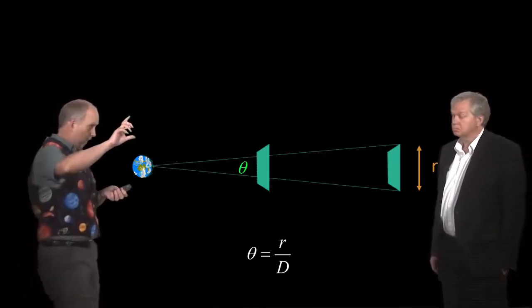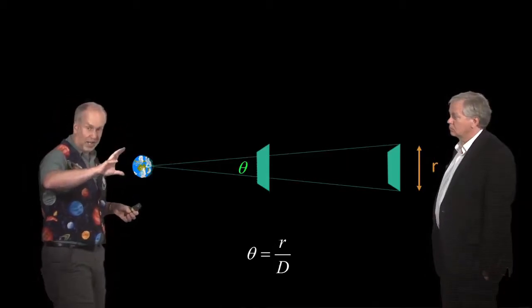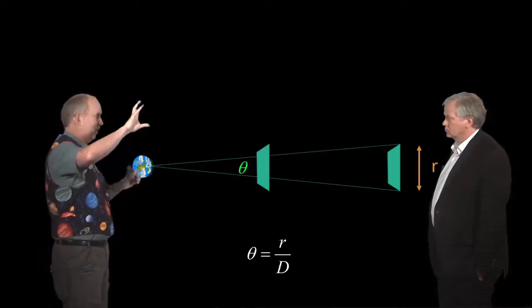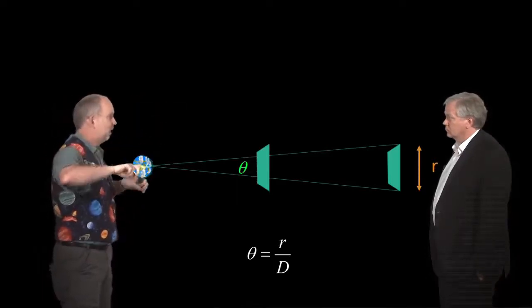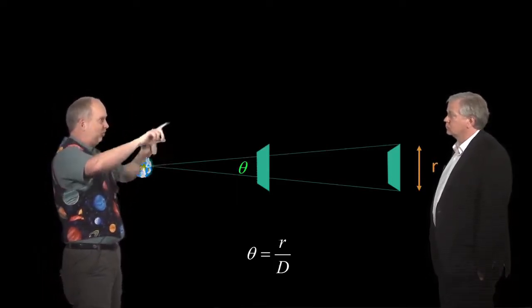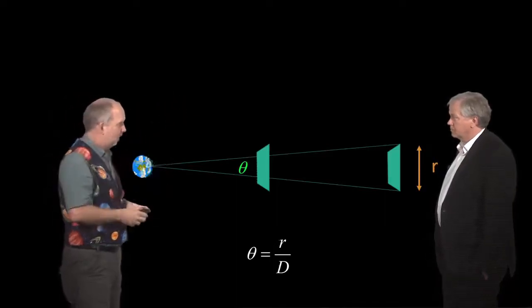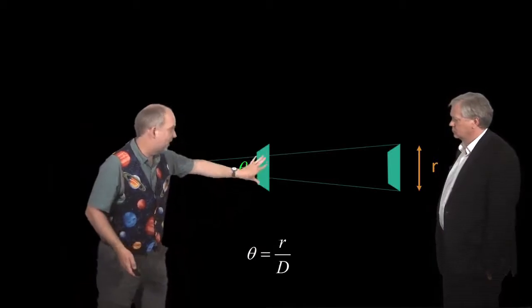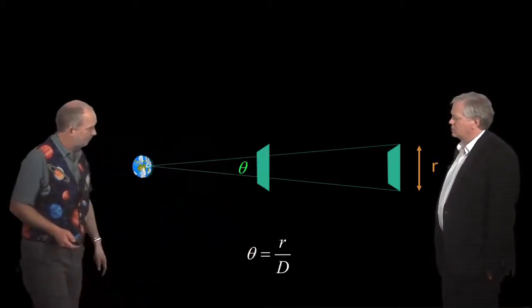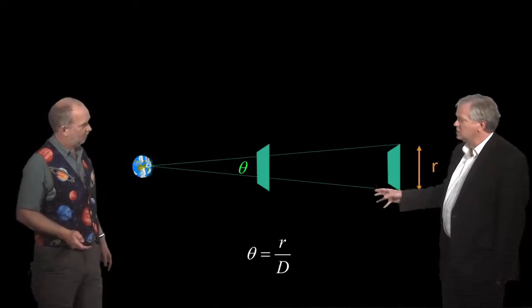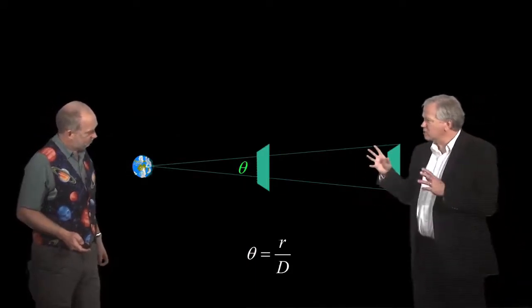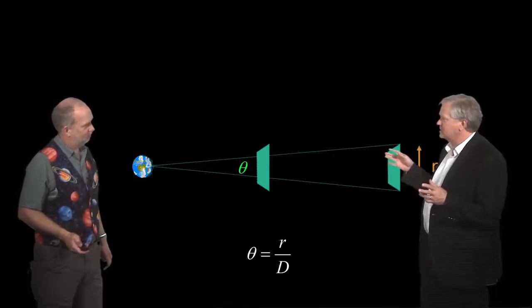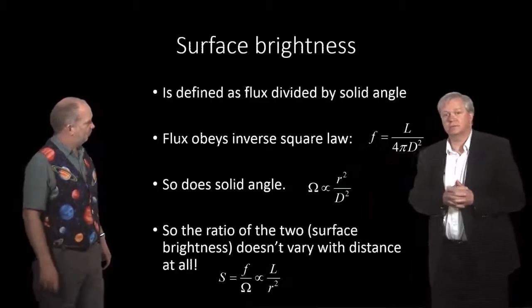But that's linear angle. What you really care about is actually something we haven't talked about before, called solid angle. Solid angle is basically what fraction of the total sphere something covers. So it's like an angle area. And so that's kind of like theta wide, theta down, so it's going to be like theta times theta. And so that's going to go as r squared over d squared. r squared is basically the area divided by the distance squared. Ah, so the total solid angle, that angular area, is dropping as the distance squared as well. Okay. That's right.